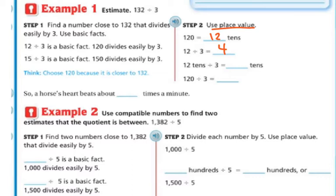12 tens divided by 3 is 4 tens and 4 tens is 40.